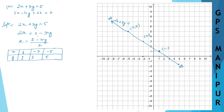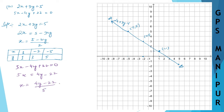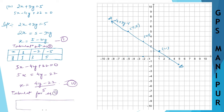Now let's change the color and do the next equation. The second equation is 5x minus 4y plus 22 equal to 0. Transfer: 5x is equal to 4y minus 22, so x is equal to 4y minus 22 divided by 5. Now draw the tabulation for equation number 2.